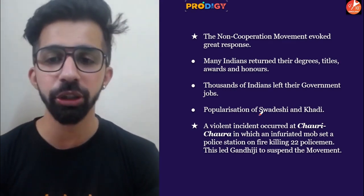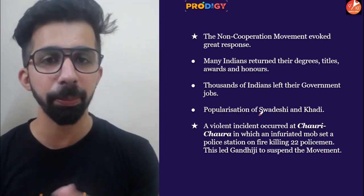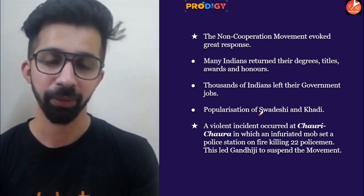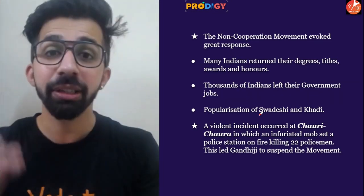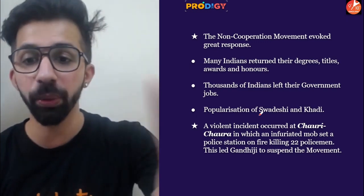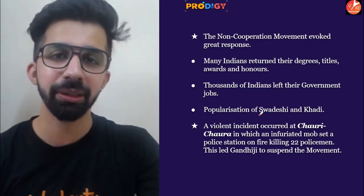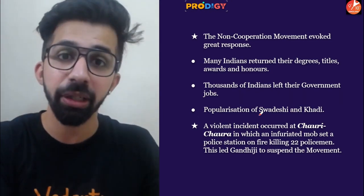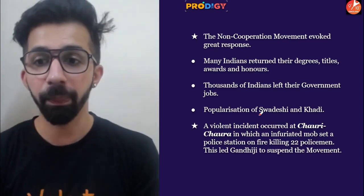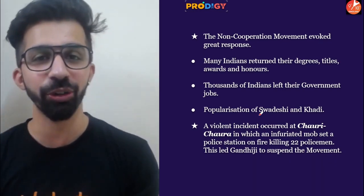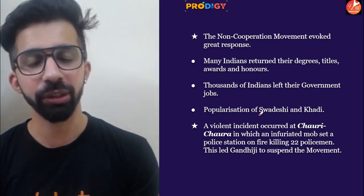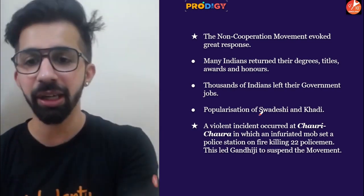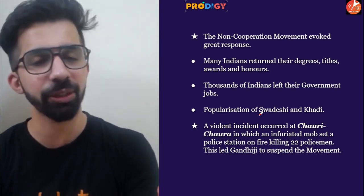After this great support, an incident took place in Chauri Chaura in Bihar where 22 policemen were killed. Some Satyagrahis were protesting when the police started lathi charges on them. The Satyagrahis became so enraged that they set the entire police station on fire and 22 policemen were killed on the spot. Since Gandhi ji was a non-violent person, this incident was against his ideology.